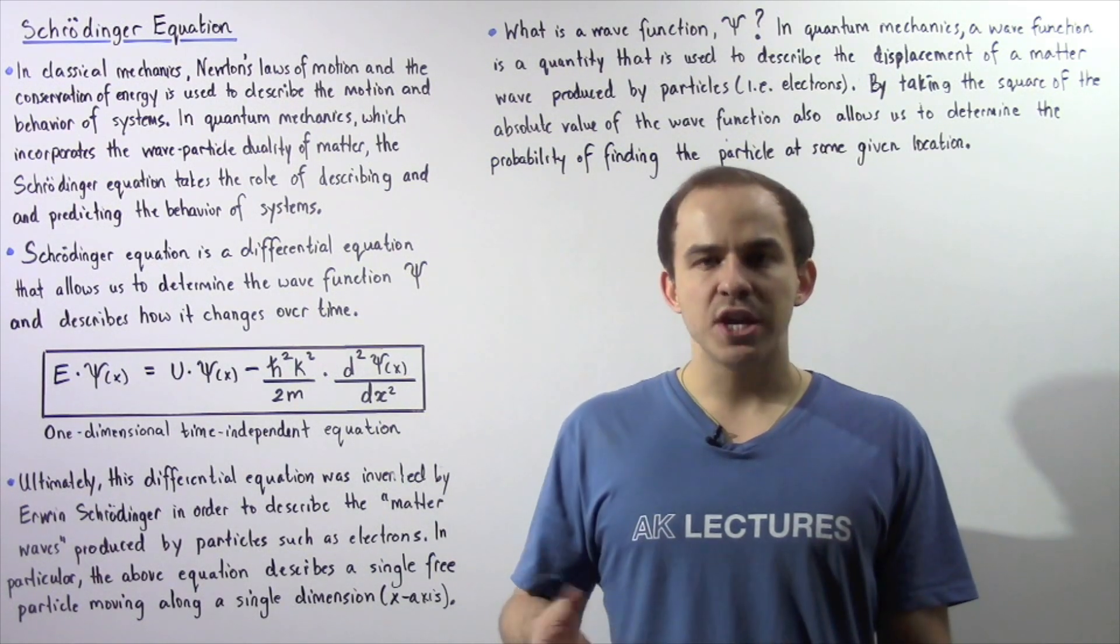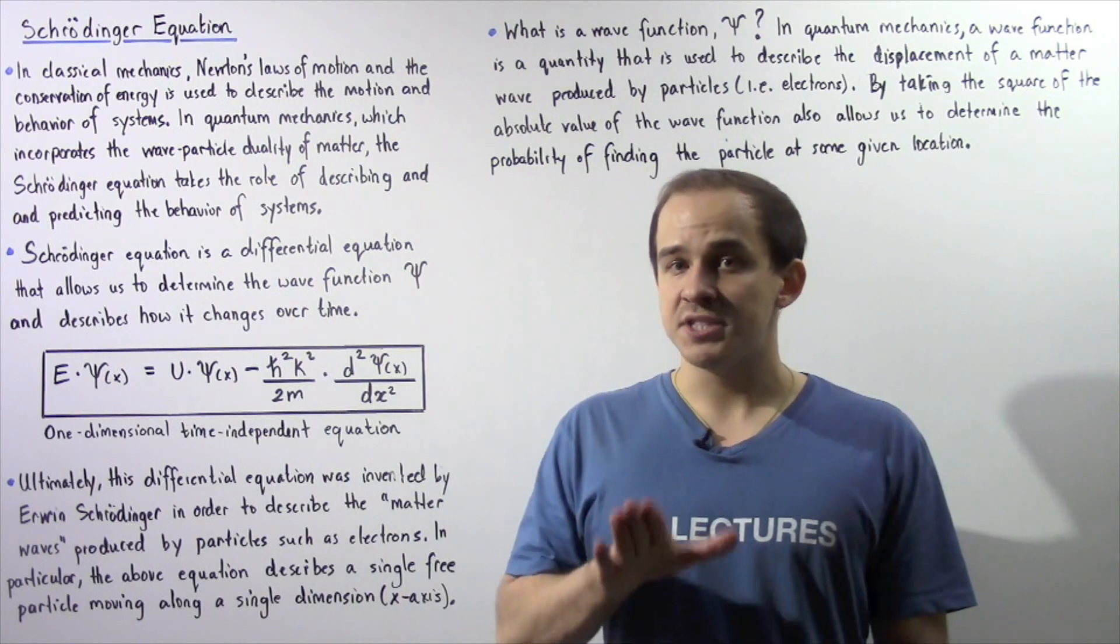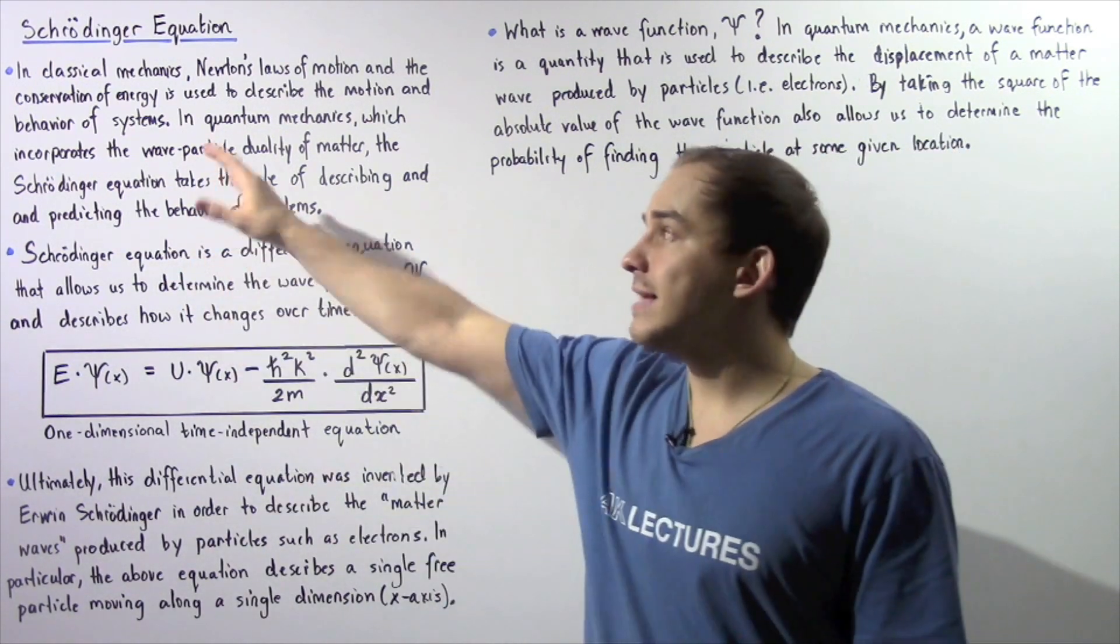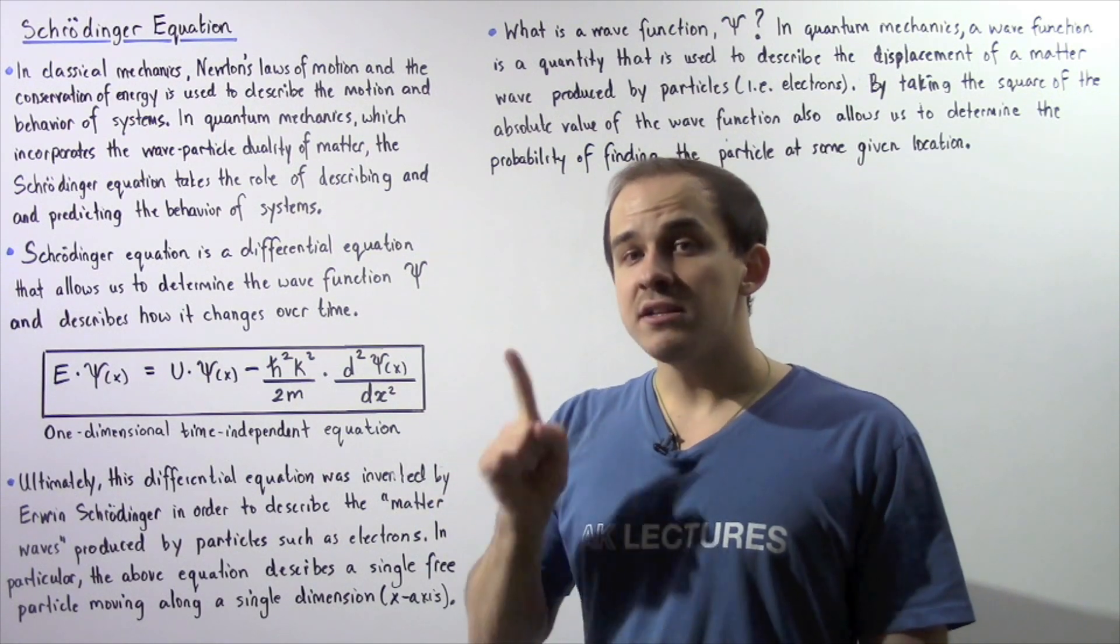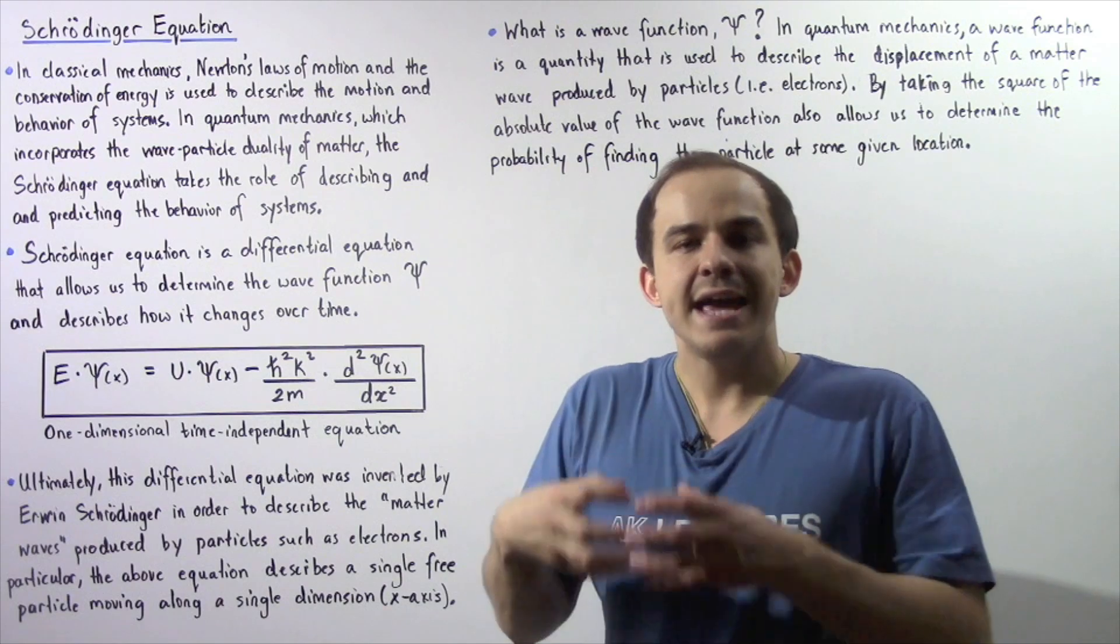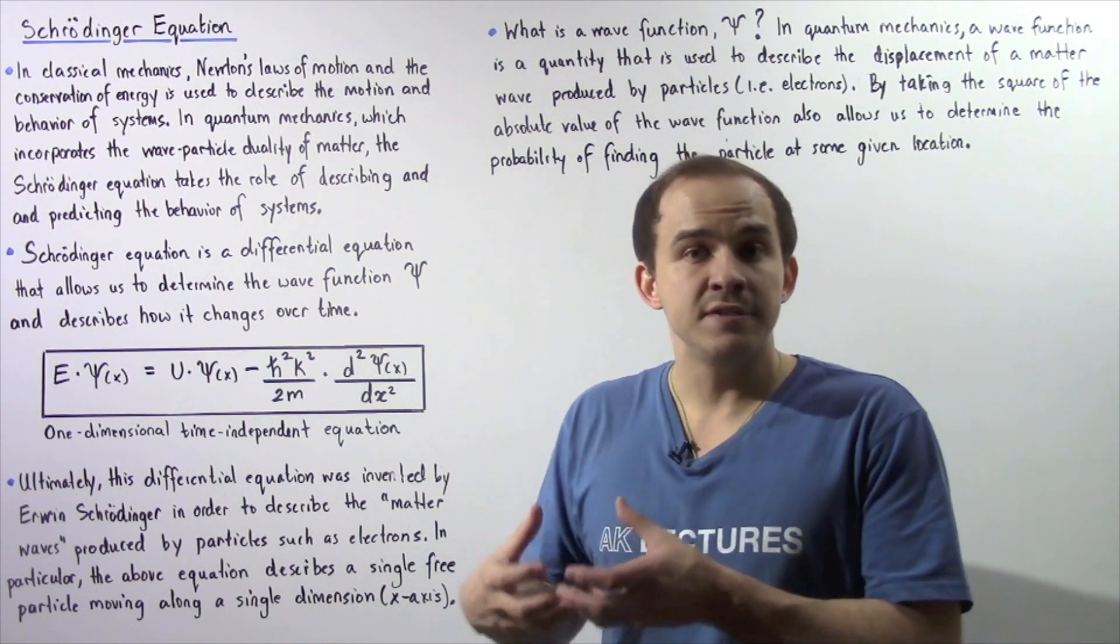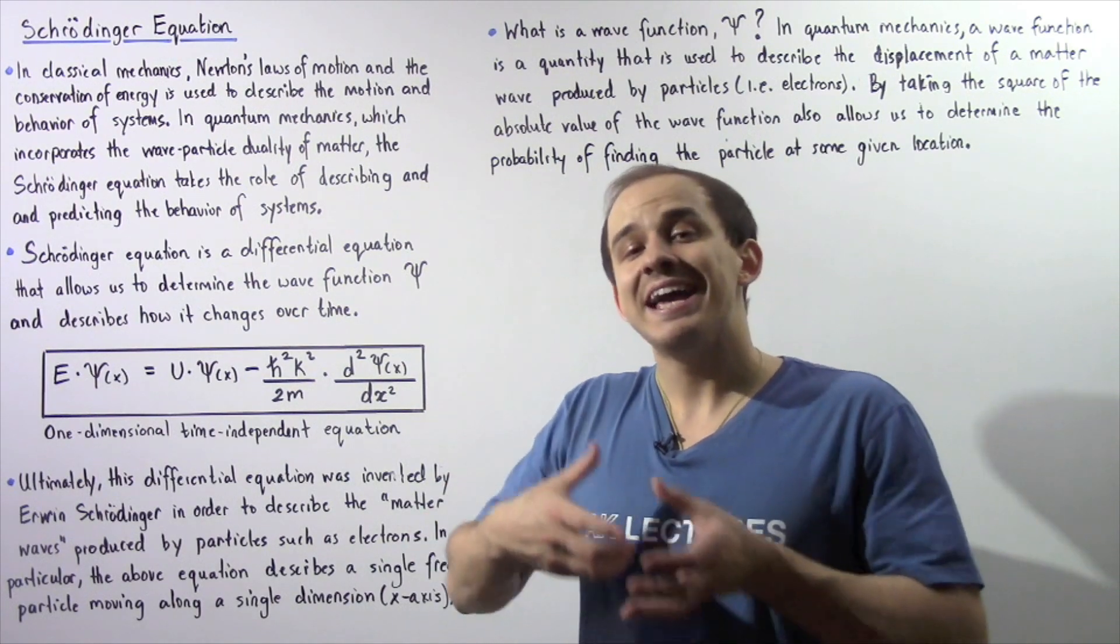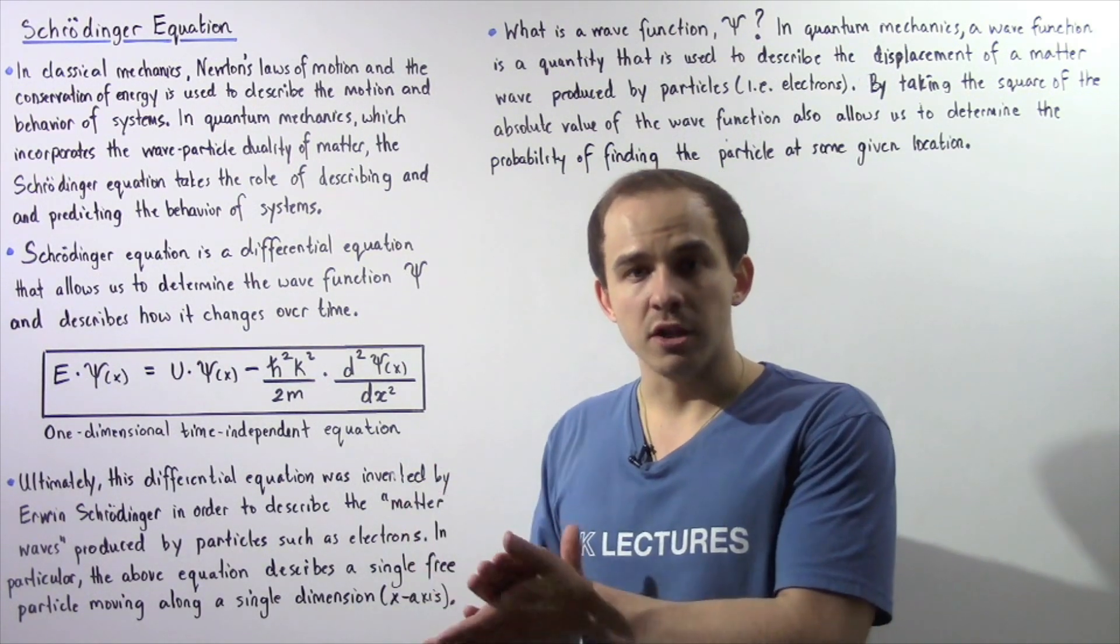Now a system could be any object that we are studying, and in this particular lecture we're going to use the electron as our system. So in classical mechanics, an electron is believed to be a solid sphere. It's believed to be composed entirely of matter, so it acts exactly as a particle.